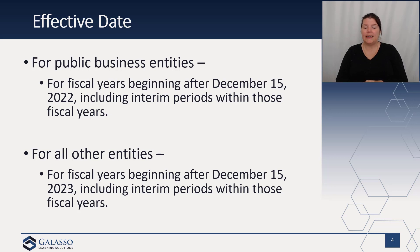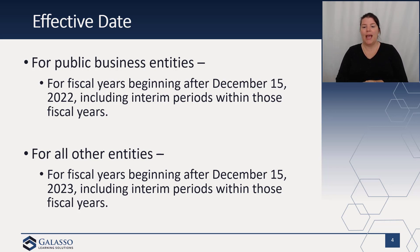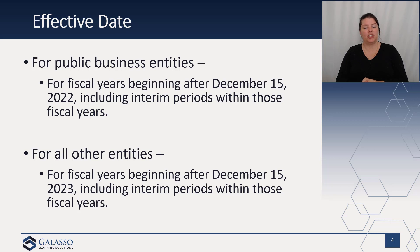In terms of the effective date, it is effective for public business entities for fiscal years beginning after December 15, 2022, including interim periods. For everyone else, it is fiscal years beginning after December 15, 2023. Early adoption is permitted. The amendments are applied prospectively to business combinations occurring on or after the effective date, and retrospectively to any business combination that occurred in the year of the financial statements, then prospectively going forward to any combinations on or after the date of initial adoption.